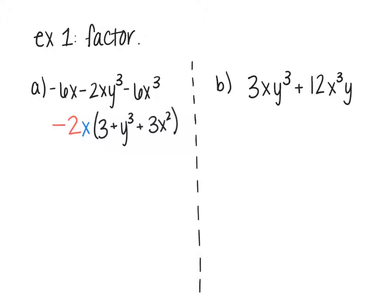So the second one, I have 3xy³ plus 12x³y, so piece by piece. Numbers first. I have a 3 and a 12, so the biggest thing that 3 and 12 have in common is 3. So I'm going to take out a 3. Now the next one, I have x and x³. Well, the biggest thing that they both have is an x, and then y³ and y, the biggest thing they have in common is a y.